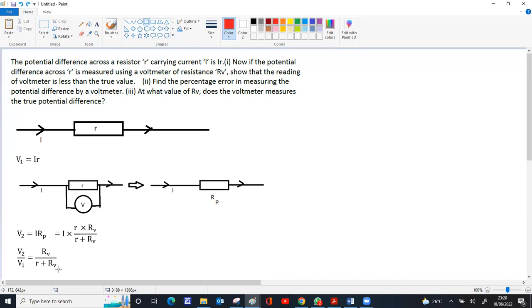Since rv is compared to r plus rv, rv is less than r plus rv because something is added to rv. If you add something to rv, it's always greater than rv alone. That means v1 is greater than v2, or v2 is less than v1. That completes the first part showing v2 is less than v1.